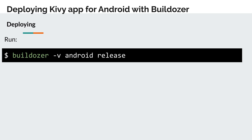After this we are ready to build a release. Run this command below: buildozer -v android release.